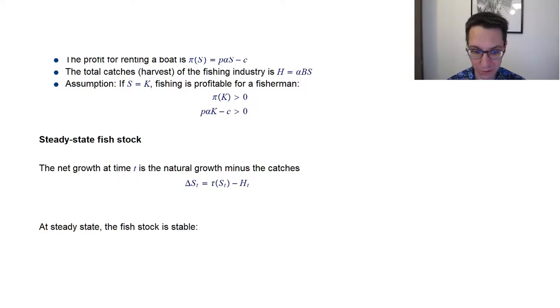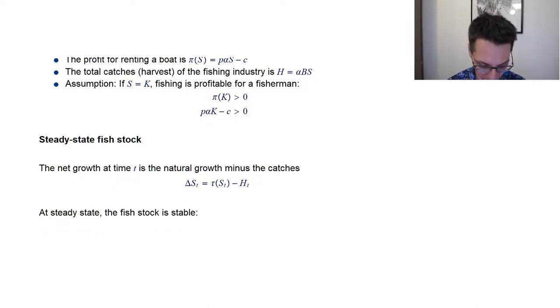So that's τ(st) minus how many fishes are caught. So that's harvest at time t. And now we just substitute what we know about these two. So it's Δst equals r·st·(1 - st/K) minus α·Bt·st. And boats is not a constant. It's some state variable that's going to be described by the model. So it's going to change over time.